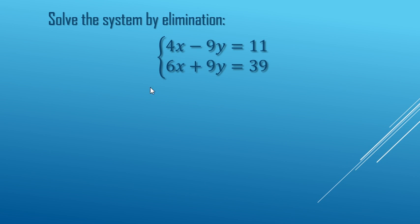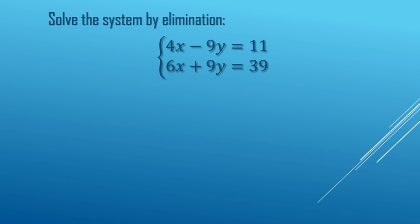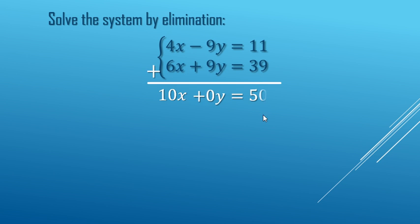We are going to solve this system of equations by elimination. Elimination is when you try and eliminate or get rid of one of the variables using addition. So let's go ahead and do the addition step here. 4x plus 6x makes 10x. Negative 9y plus 9y makes 0 y's. And 11 plus 39 makes 50.